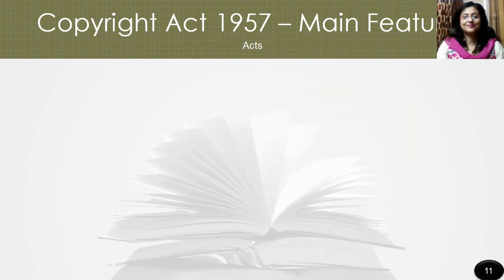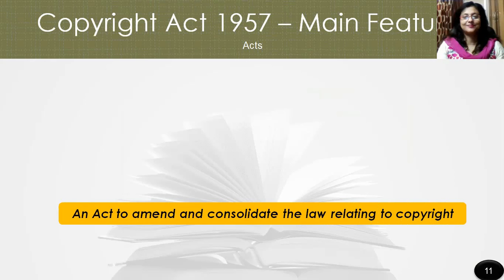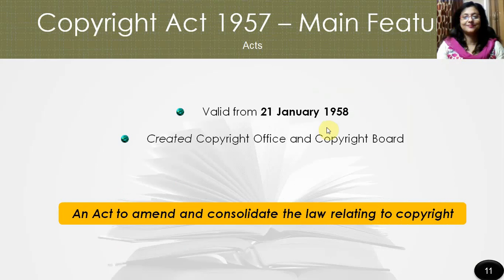The Copyright Act of 1957 was made as an act to amend and consolidate the law relating to copyright. It became valid from 21st January 1958. At that point of time, the Copyright Office and Copyright Board were both created, and it introduced civil and criminal remedies against infringement.